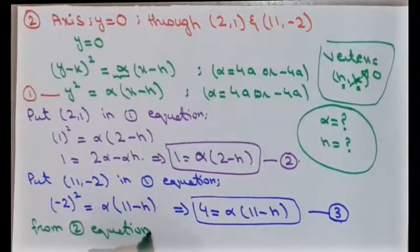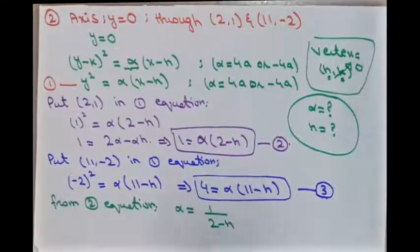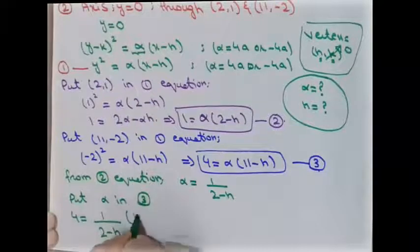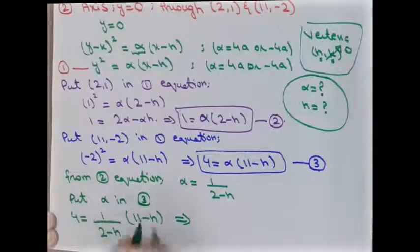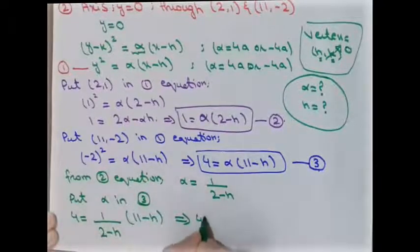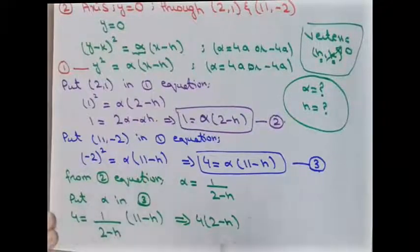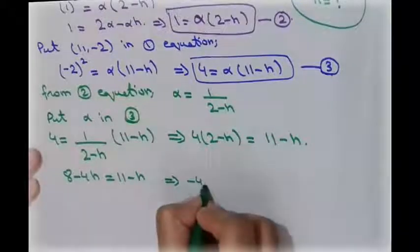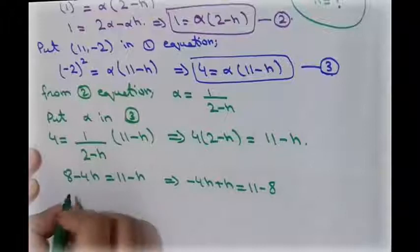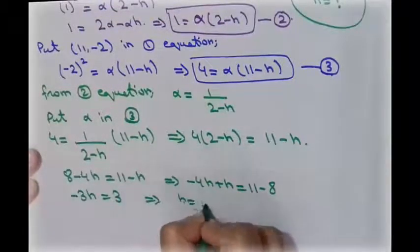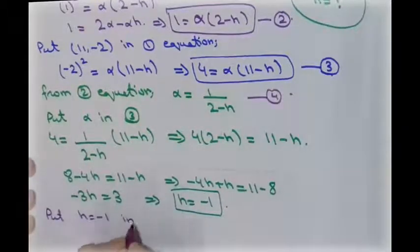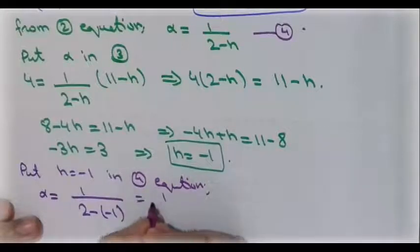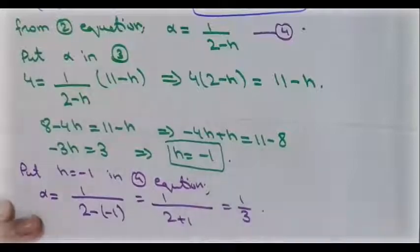From the second equation, alpha = 1/(2 - h). Substituting into the third equation: 4 = [1/(2 - h)]·(11 - h). Multiplying both sides by (2 - h): 4(2 - h) = 11 - h, giving 8 - 4h = 11 - h, so -3h = 3, thus h = -1. Then alpha = 1/(2 - (-1)) = 1/3.